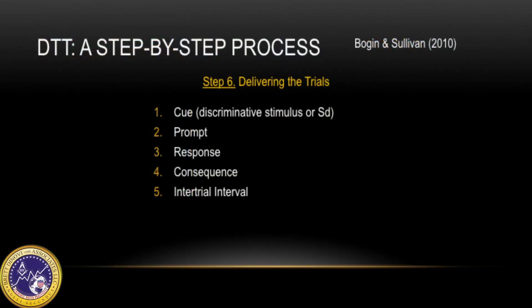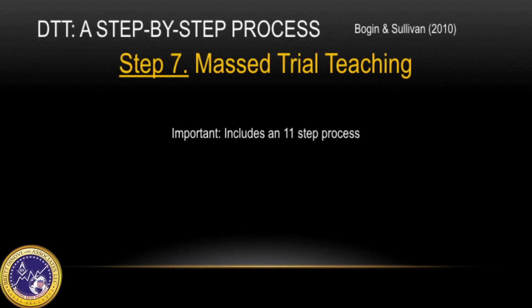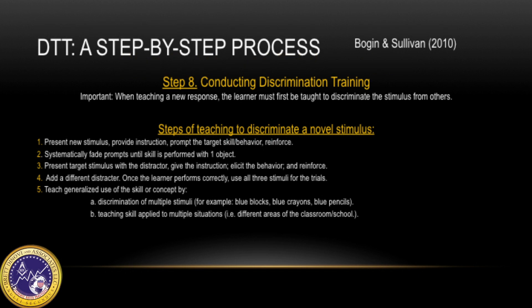Step six is delivering the trials. As discussed earlier, the steps are cue, prompt, response, consequence, and inter-trial interval. Step seven is massed trial teaching, where the same learning trial is repeated over and over several times in a row to ensure the learner is successful multiple times at the current step. Step eight is conducting discrimination training — a big part of DTT is teaching learners to distinguish what they've learned when other distractors or stimuli are present. The article provides five steps in teaching discrimination training.